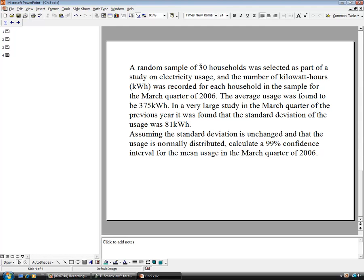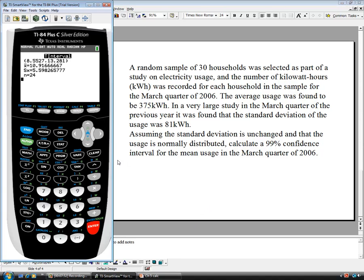The last one, we have a random sample of 30 households selected as part of a study on electrical usage. We count the kilowatt hours for each household in the March quarter of 2006. The average was found to be 375 kilowatt hours and the standard deviation was 81 kilowatt hours. We're assuming the standard deviation is unchanged and the usage is normally distributed. Calculate a 99% confidence interval for the mean usage. We have 30. That's large enough to be a large sample. We're also told that it's normal. We're going to run the Z interval.